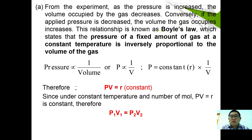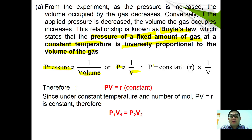This is known as Boyle's law, which states that the pressure of a fixed amount of gas at constant temperature is inversely proportional to the volume. So pressure is inversely proportional to volume, or P × V equals a constant R. At constant temperature and number of moles, PV = R, therefore P₁V₁ = P₂V₂.